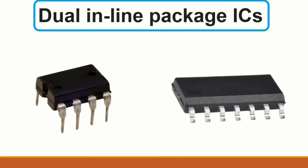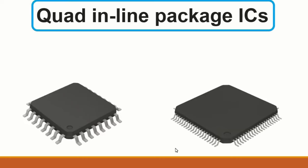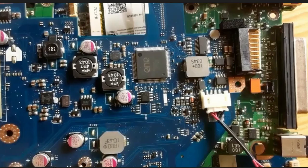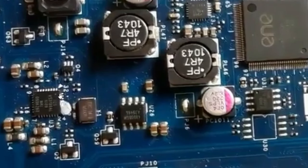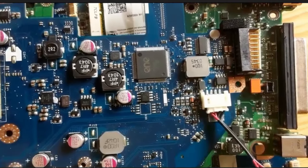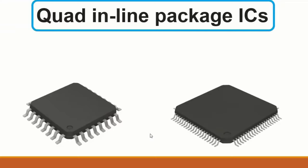The quad inline package IC has pins on four sides. On the motherboard, here are quad inline package ICs - you can see the pins are on all four sides. Then we revisit the transistor: it has base, emitter, and collector - a THT transistor because it has through-hole terminals.